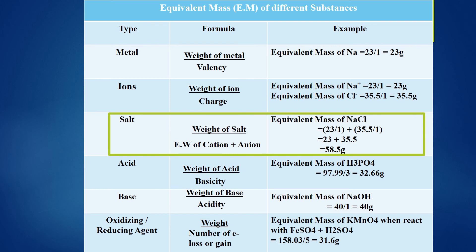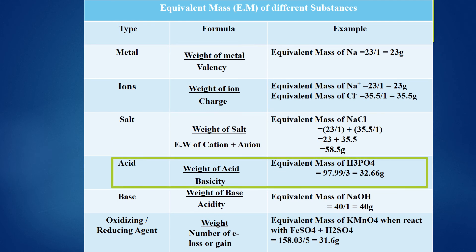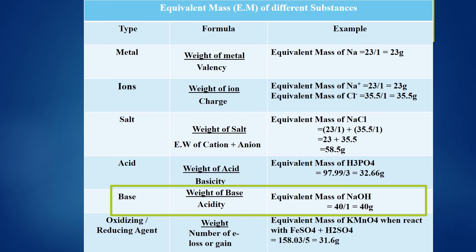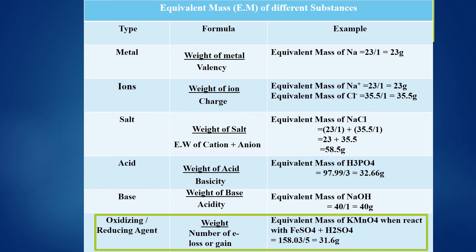For example, for calculating equivalent mass of sodium chloride, first find out equivalent mass of sodium ion and chloride ion individually, which is 23 for sodium ion and 35.5 for chloride ion. Adding them gives the equivalent mass of sodium chloride as 58.5 grams. For calculating equivalent mass of an acid, divide molecular weight of acid by its basicity, where basicity is the number of replaceable hydrogen ions. For a base, divide molecular weight by its acidity, where acidity is the number of replaceable hydroxide ions. For oxidizing or reducing agents, divide molecular weight by number of electrons lost or gained.